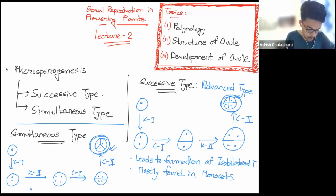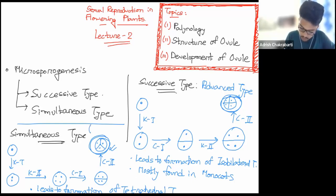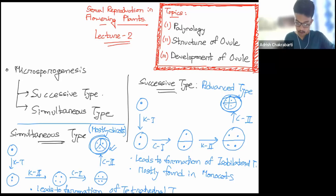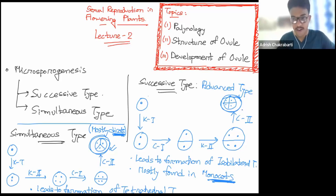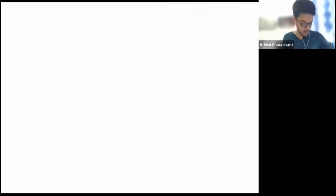So to summarize: successive type is mostly found in monocots and leads to the formation of an isobilateral tetrad. Simultaneous type is mostly found in dicots and leads to the formation of a tetrahedral tetrad. The key process difference is that in the successive type, karyokinesis 1 is followed by cytokinesis 1 before karyokinesis 2, while in the simultaneous type both karyokineses occur before cytokinesis.